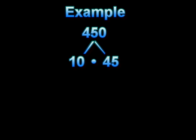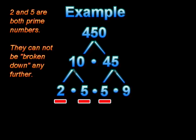The numbers 10 and 45 are still composite numbers. They can be broken down even further. Underneath the number 10, we are going to write 2 times 5. Remember, when writing two numbers underneath a number, those two numbers must be multiplied to make that number. And 45 can be broken down into the numbers 5 times 9, which produces 45.